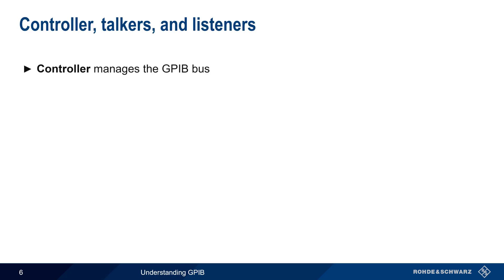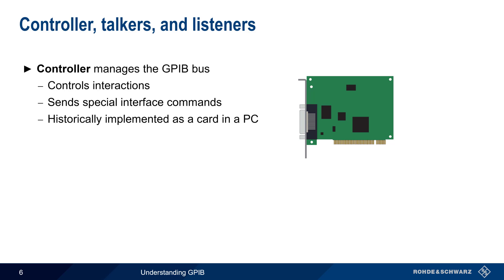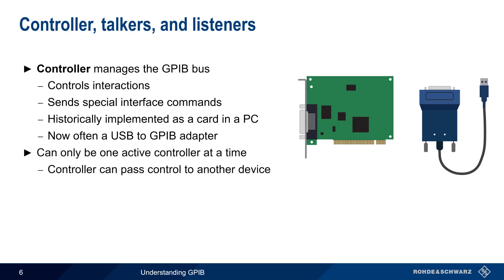A GPIB bus is managed by a controller. This node controls the interactions between devices on the bus and also sends special interface commands. Historically, the controller was most often implemented as a card installed into a PC, but USB to GPIB adapters are common in more recent applications. There can only be one active controller on the bus at a time. GPIB does provide a procedure for a controller to pass control to another device, but this is uncommon.